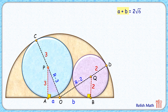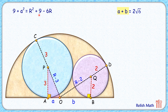In triangle PAO, applying Pythagoras' theorem: 3² + a² = (r−3)². Since 3² is 9, and expanding (r−3)² using the a minus b whole square identity, the 9 cancels on both sides. Taking the square root of both sides, we get the value of a as √(r²−6r).